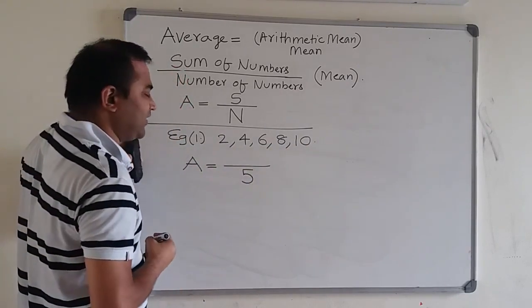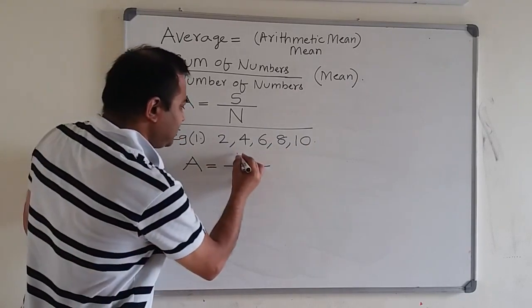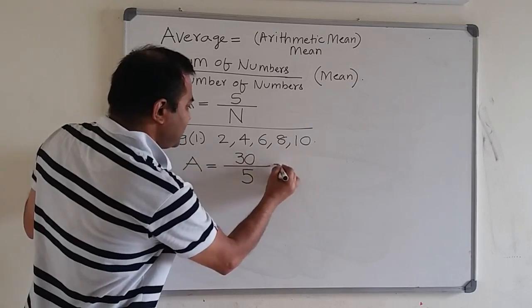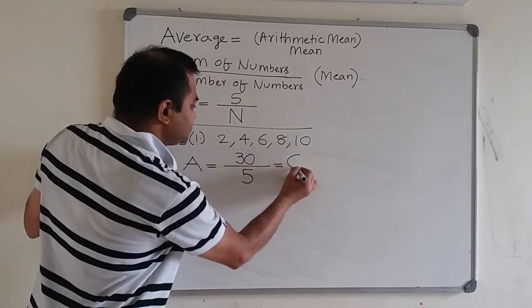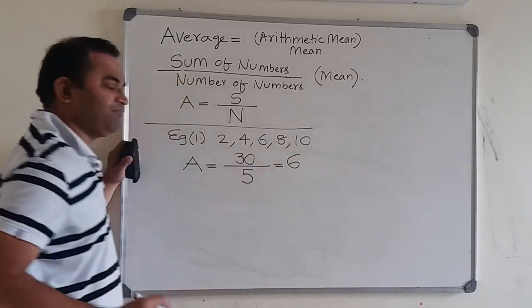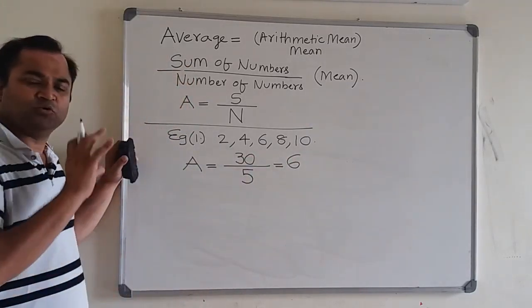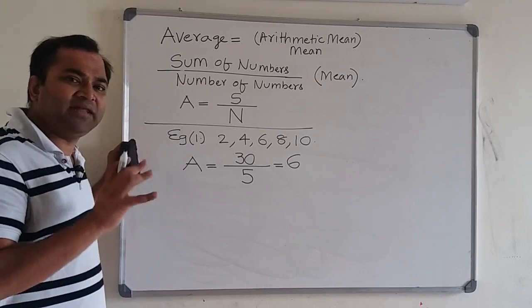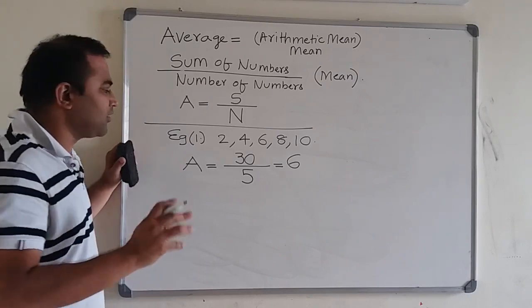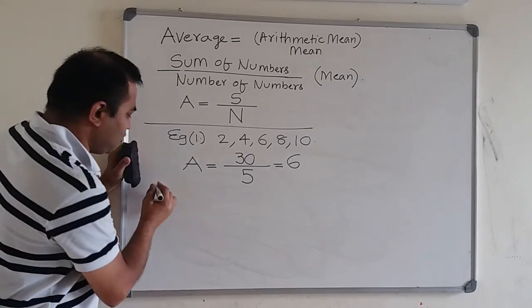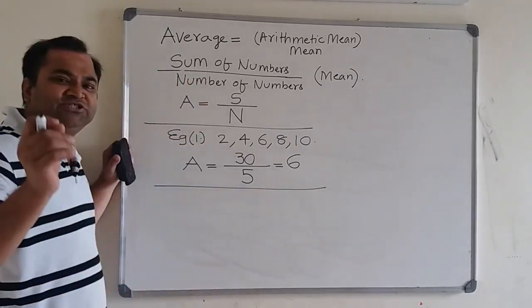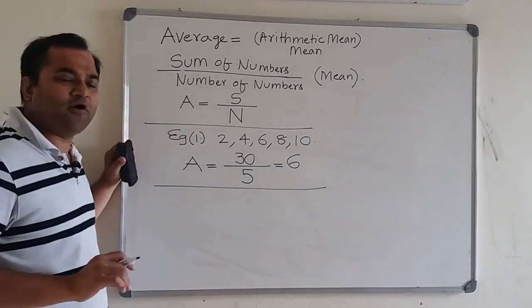Average or mean equals: how many numbers are there? 5. And what will their sum be? Take a second and add them — the sum is 30. So average equals 30 divided by 5, which is 6.